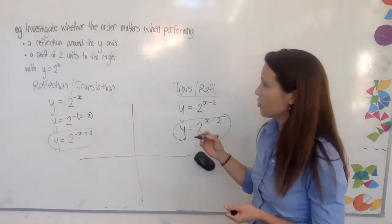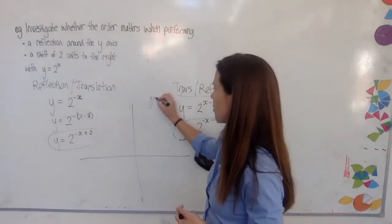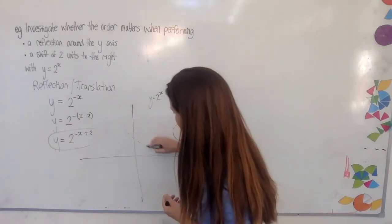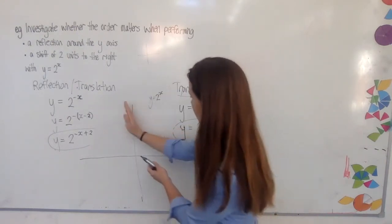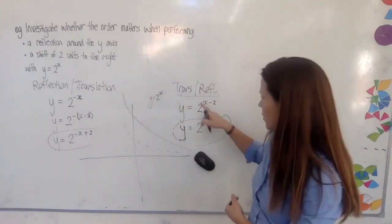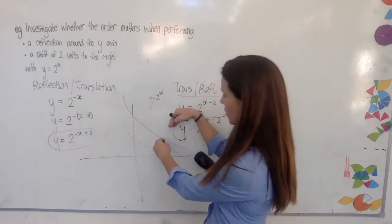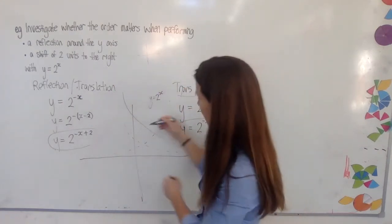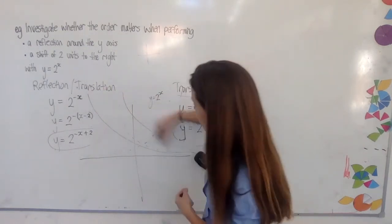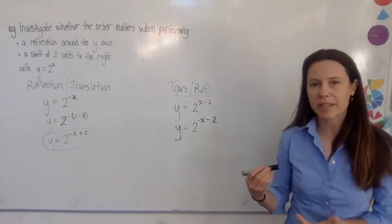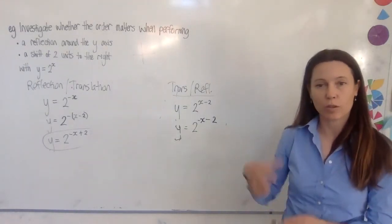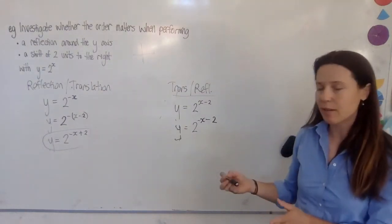This should be quite obvious if we imagine what happens with our basic curve y equals 2 to the power of x. If we reflect it first, it flips exactly where it lies. Then shifting it two to the right moves that reflected curve over to the right. But if we take the original curve and move it to the right first, it sits out to the right. Reflecting it then sends the wide part to the left instead of the right, giving us two completely different looking curves. So when graphing functions and identifying transformations, we need to be really careful about the order.